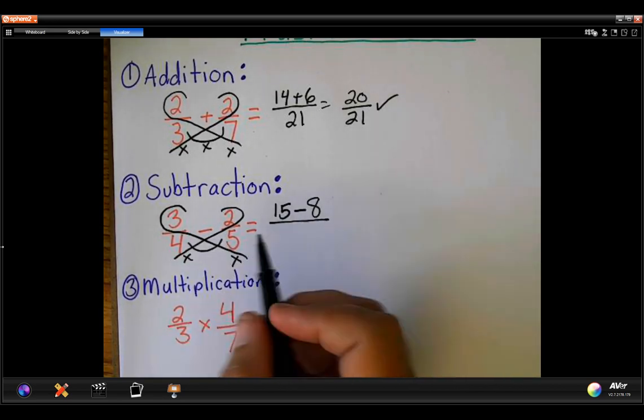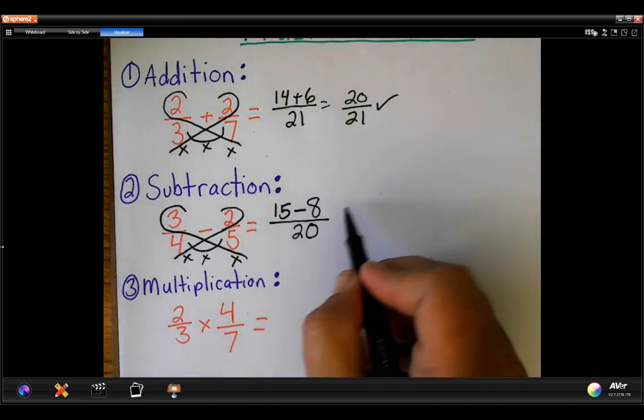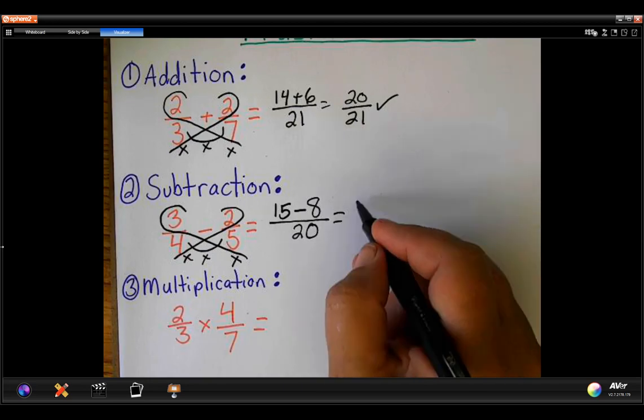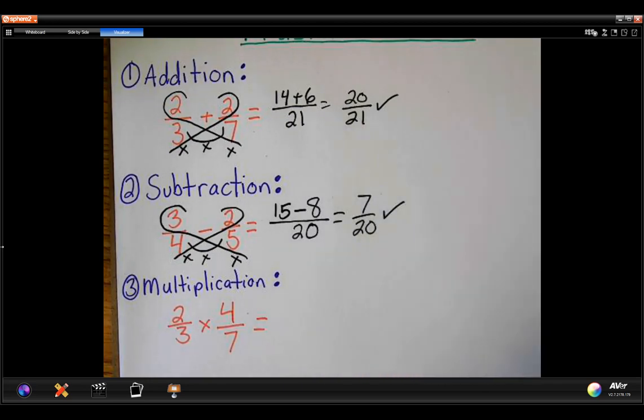I'm going to multiply the denominators. That equals 20. 15 minus 8 is 7 out of 20. Check. Correct.